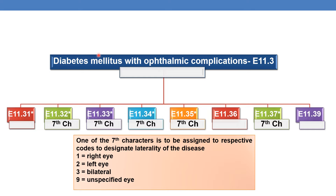The code for diabetes mellitus with ophthalmic complications is given by category E11.3, and this is further expandable. E11.3 is for type 2 diabetes mellitus or diabetes mellitus NOS, and it is further subcategorized into E11.31, E11.32, E11.33, E11.34, E11.35, E11.36, E11.37, and finally E11.39, which is the final code.